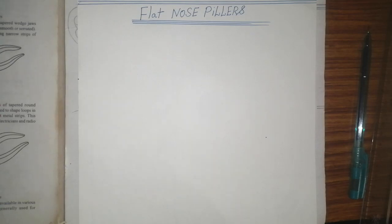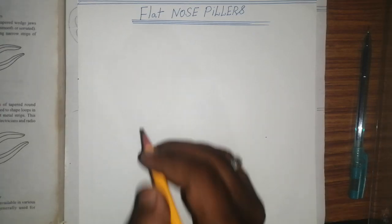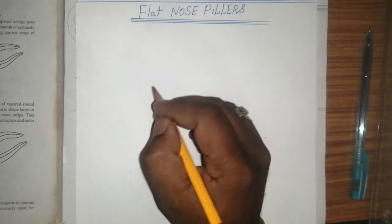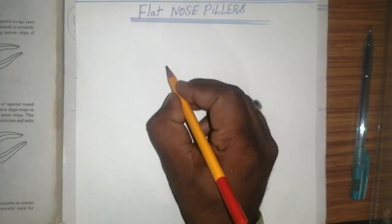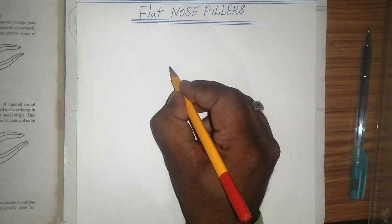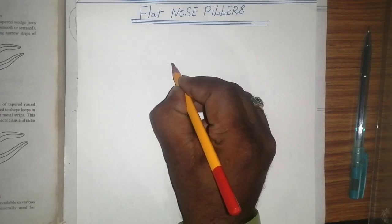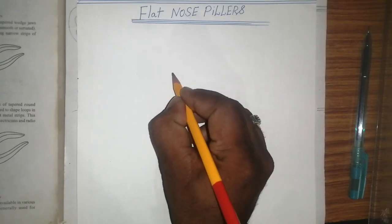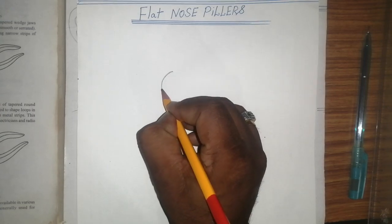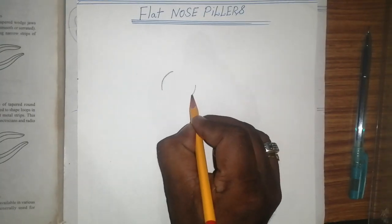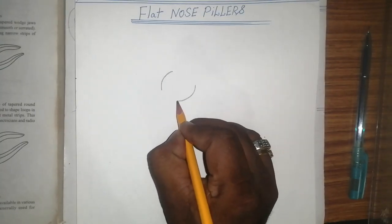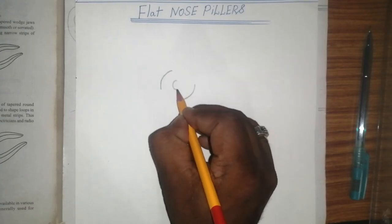Welcome to my channel MR Engineering Drawing. I'm a mechanical engineering student and today we are drawing a flat nose cutting plier. First, draw one circle, then on the opposite side draw one more circle.